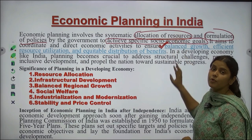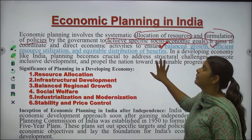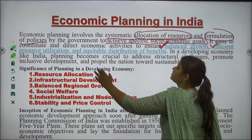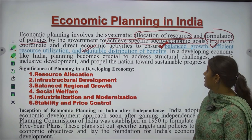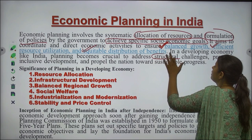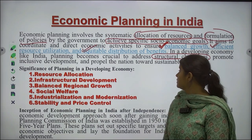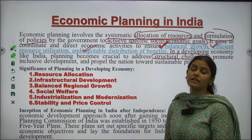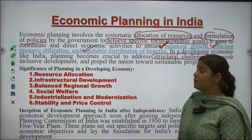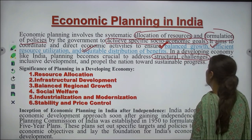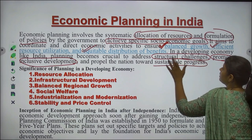Efficient resource utilization and equitable distribution of benefits means ensuring no one is excessively poor or rich, with equitable distribution of all benefits to all citizens of India. In a developing economy like India, planning becomes crucial to address structural challenges. Earlier, India was not as modernized as it is today. For that purpose, it needed to plan its economic structure to address structural challenges, promote inclusive development, and propel the nation towards sustainable progress.